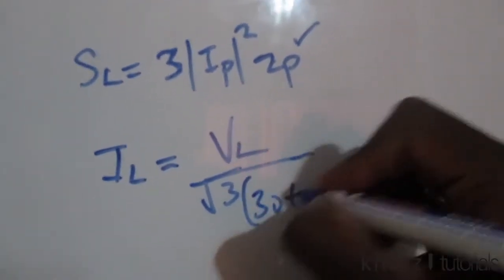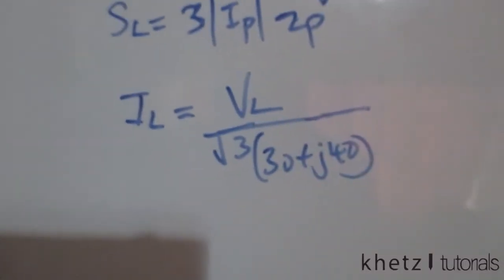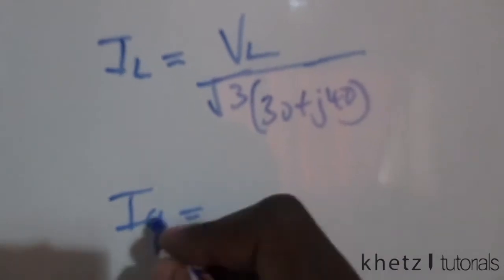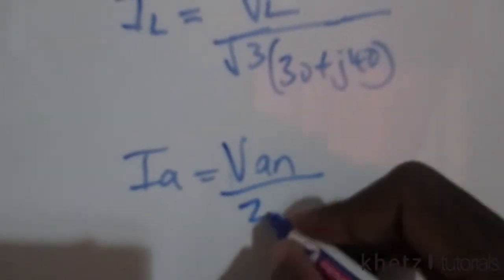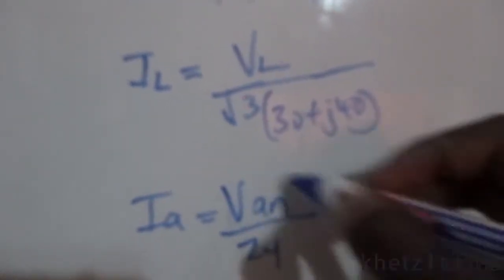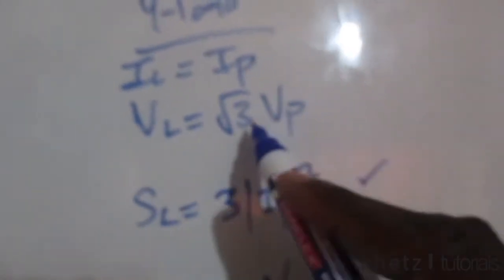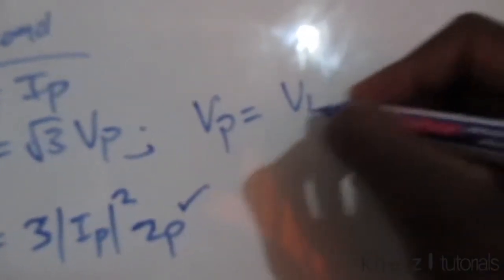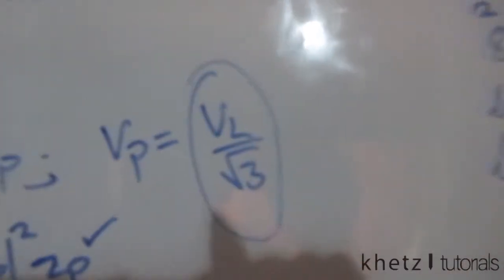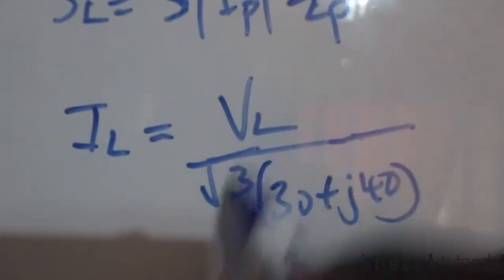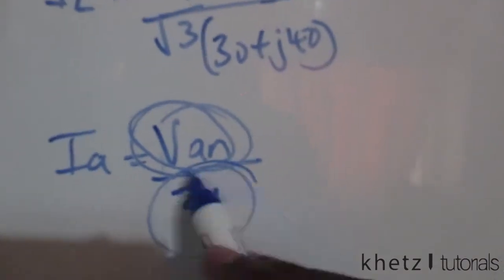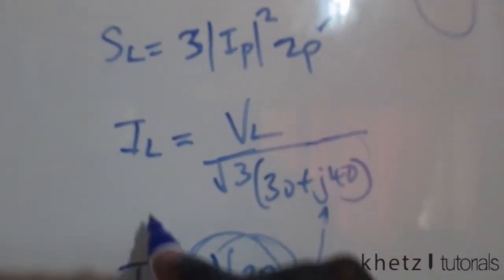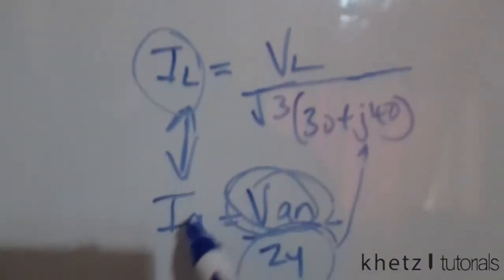This formula is derived from the fact that for a Y load the phase current and line current are equal, and the phase voltage is the line voltage divided by square root of three. So V_L over root three represents the phase voltage (Van), and dividing by the impedance gives the line current, which equals the phase current.